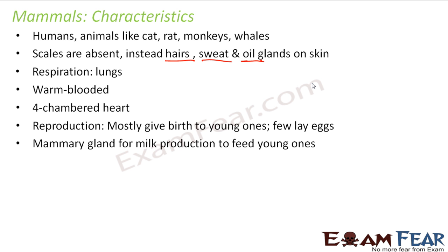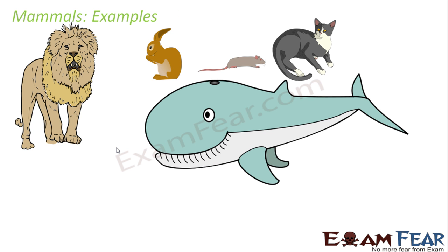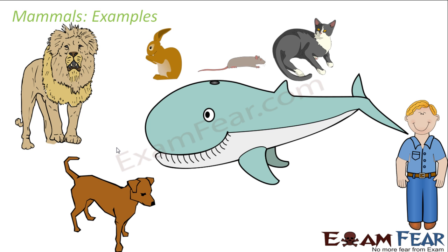Mammals have mammary glands for milk production to feed the young ones. When a small baby is born, doctors advise giving the mother's breast milk, because in human beings the females have mammary glands which produce milk during the lactation period — the period which follows the birth of a baby. After a baby is born, those mammary glands are active and produce milk fed to the newborn. Due to the presence of these mammary glands, this group of animals is known as mammals. Examples include lions, rabbits, rat, cat, whales, dogs, and human beings. In mammals there are several ways of movement — they can walk, they can jump, and some can even swing from trees like monkeys.